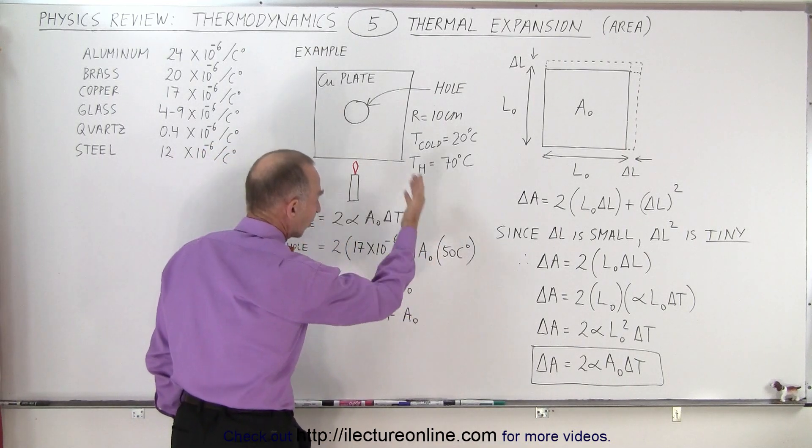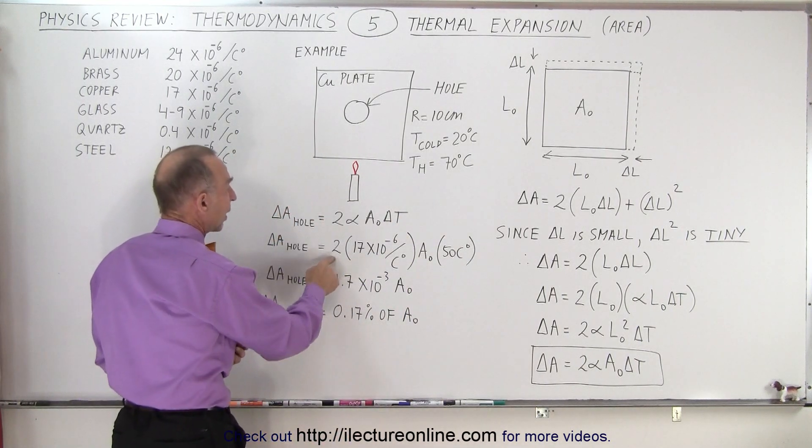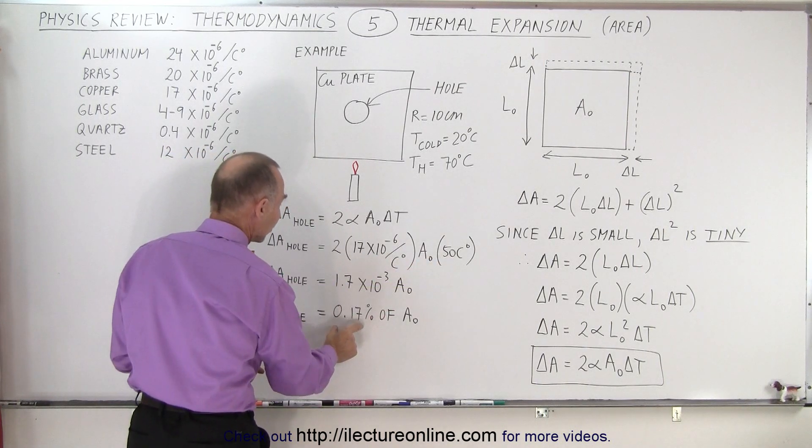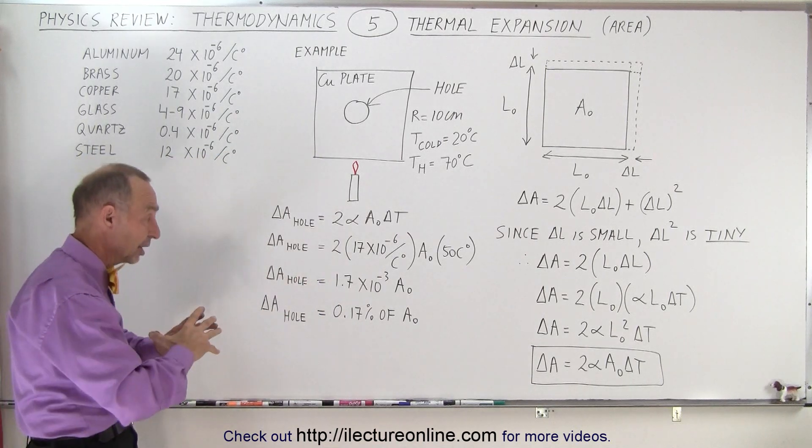The original area is pi r squared. Plugging in the numbers, twice the coefficient of linear expansion of copper times the change in temperature, we see it's a 0.17% change in area, and it does get bigger.